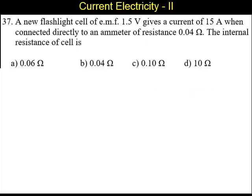A new flashlight cell of EMF 1.5 volts gives a current of 15 amperes when connected directly to an ammeter of resistance 0.04 ohms.